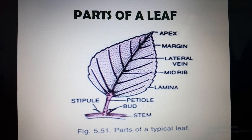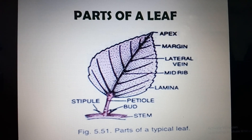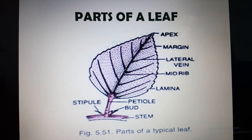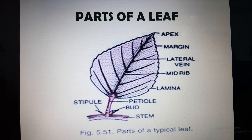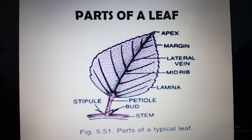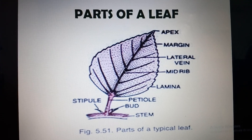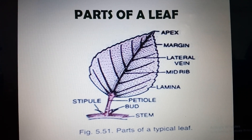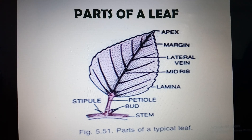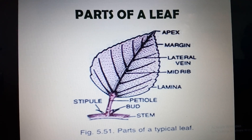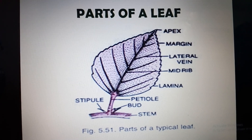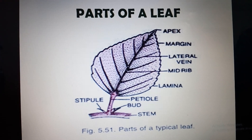Hello students. In my last class we had discussed about the types of plants like herb, shrub, trees, creepers, and climbers. In today's discussion we'll start with the parts of a leaf. You can see in the picture here the different parts of the leaf.